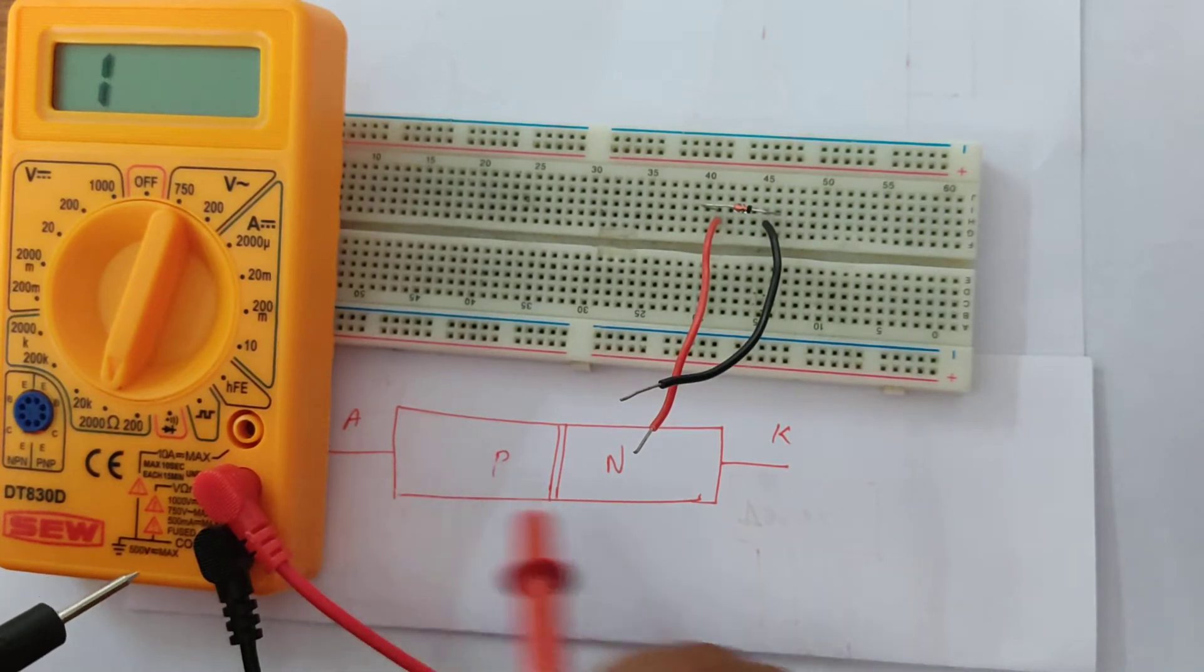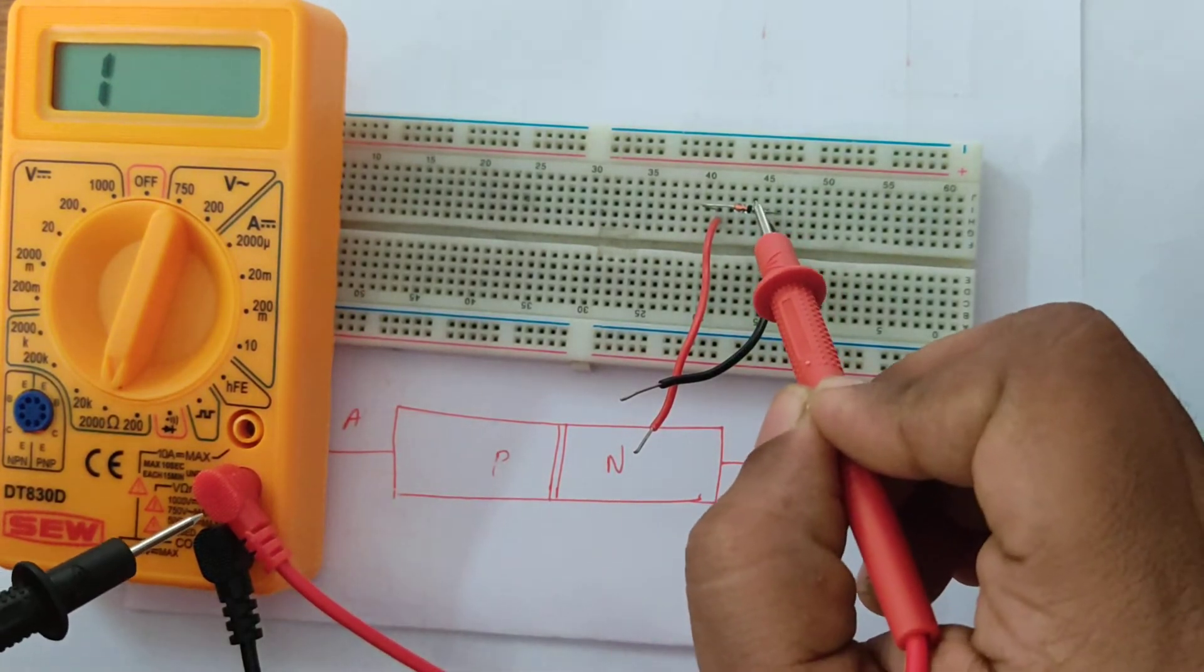So as the diagram shows, we have an anode, we have a cathode. In Zener diode, again, there is a black strip.